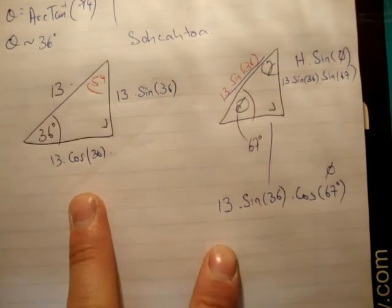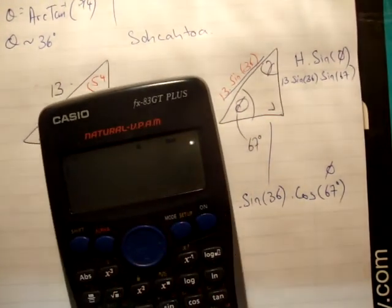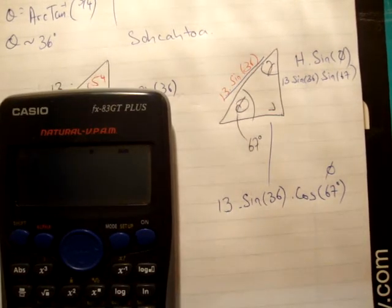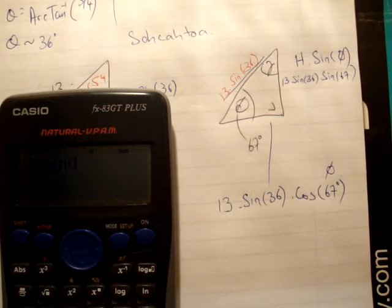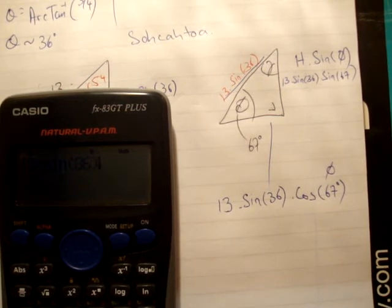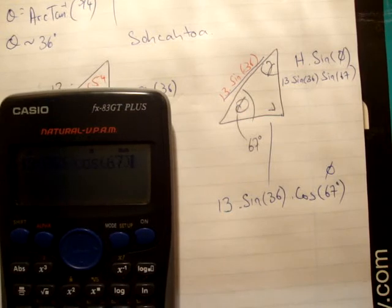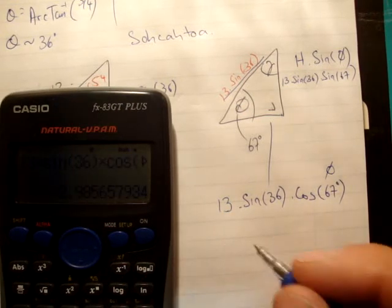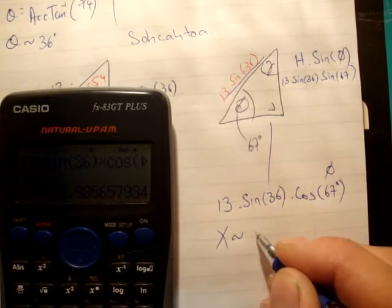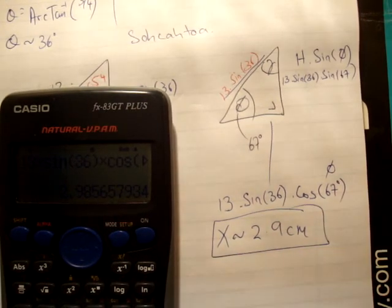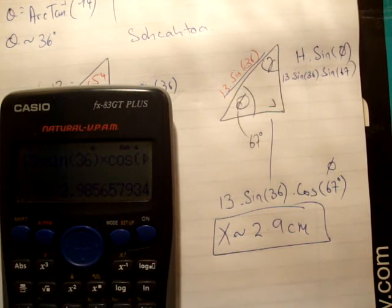And you're asked to find x. Now I never even drew x. x is this length here, which corresponds to this length here, which corresponds to 13, sine of 36, cosine of 67. And just for completeness, let's fire that into the calculator. We have 13 multiplied by the sine of 36 multiplied by the cosine of 67. Press that equals, and we have x is approximately 2.9 centimeters.